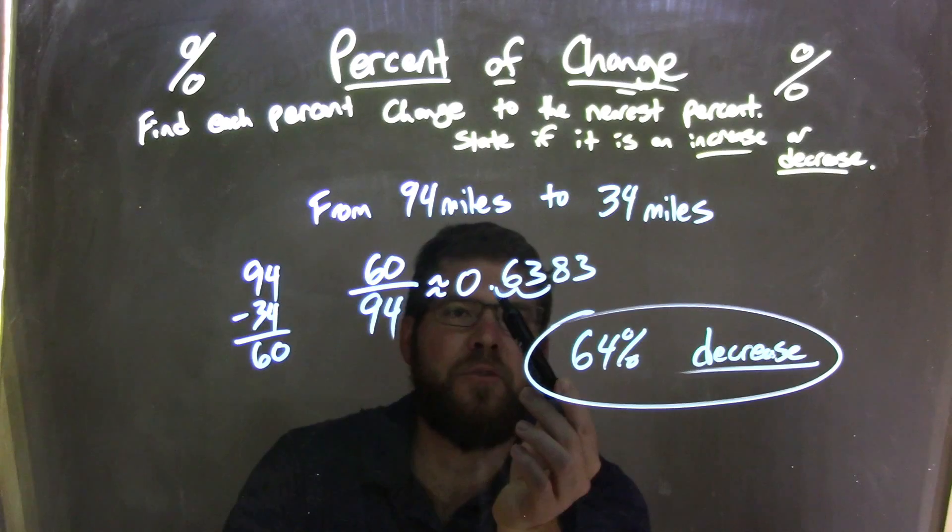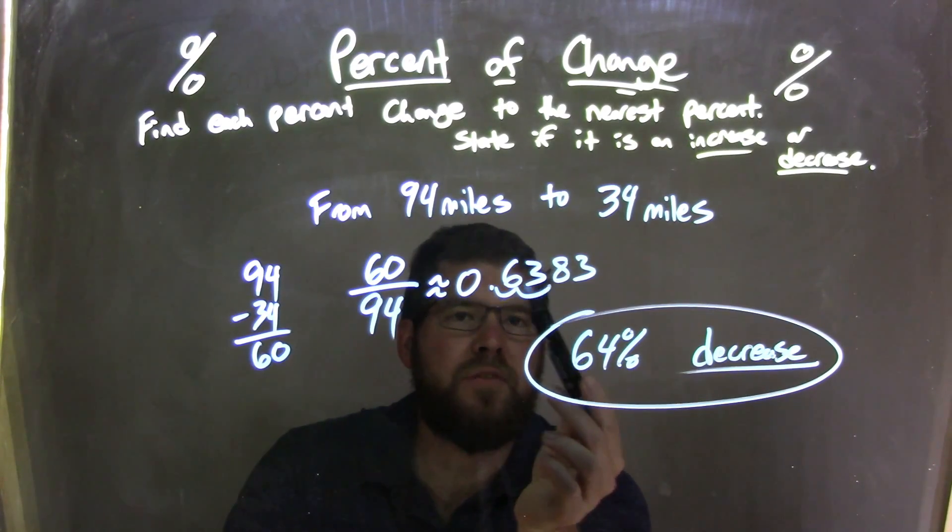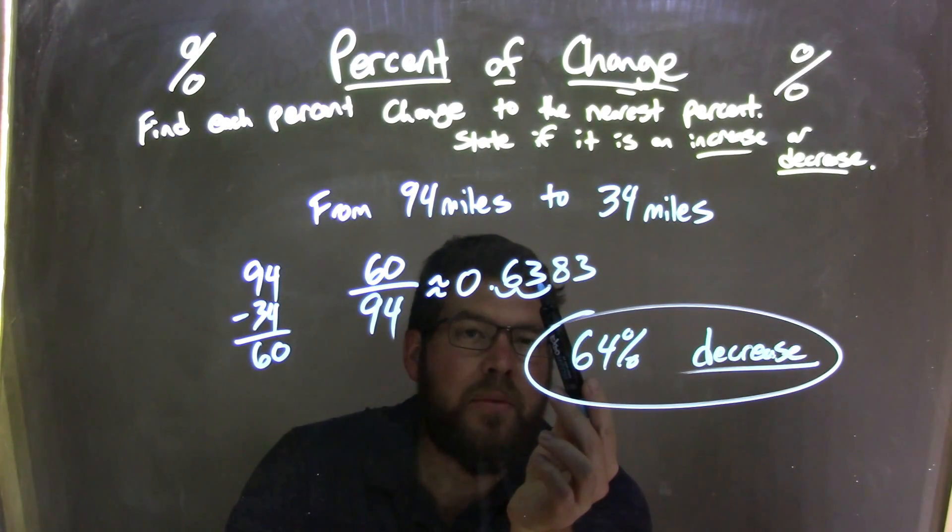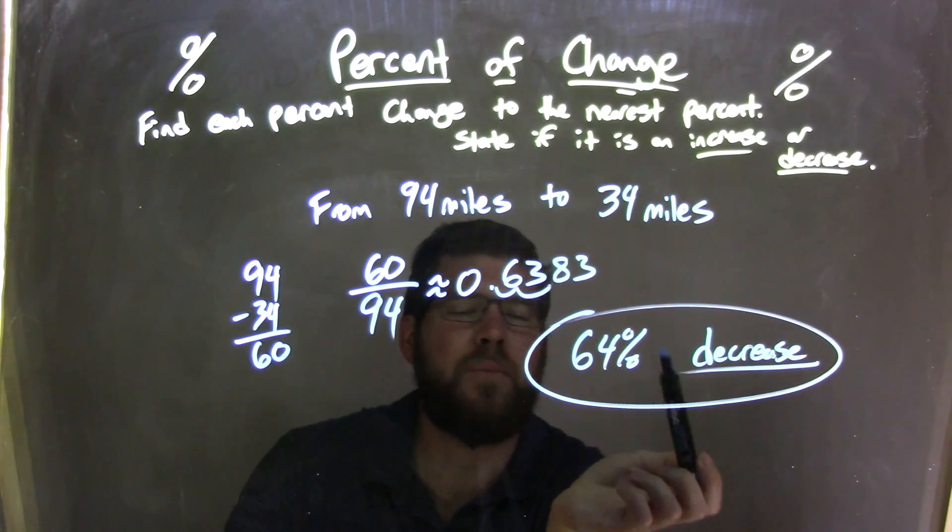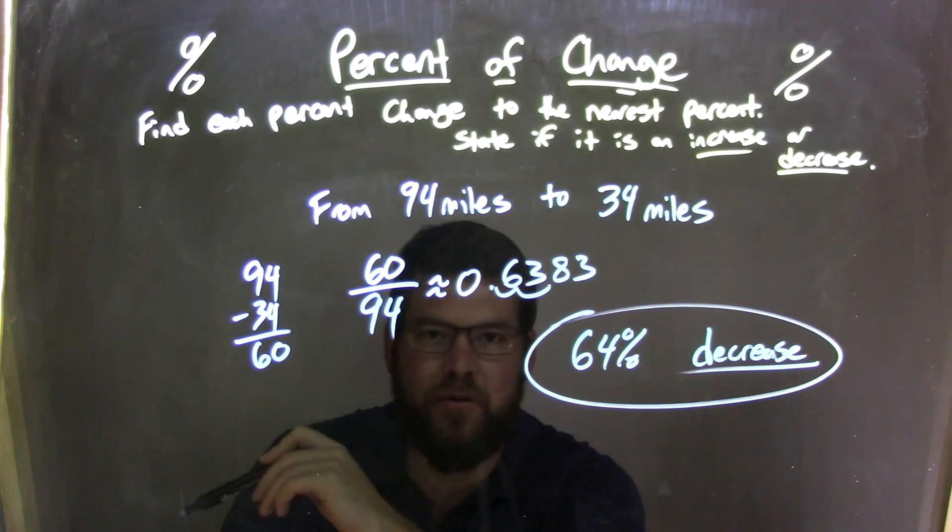We round to the nearest percent. We move it over two units, so we have 63.83. Then we take that 8, and that rounds the 3 and makes it a 4, because it's bigger than 5. So, we have a 64% decrease as our final answer.